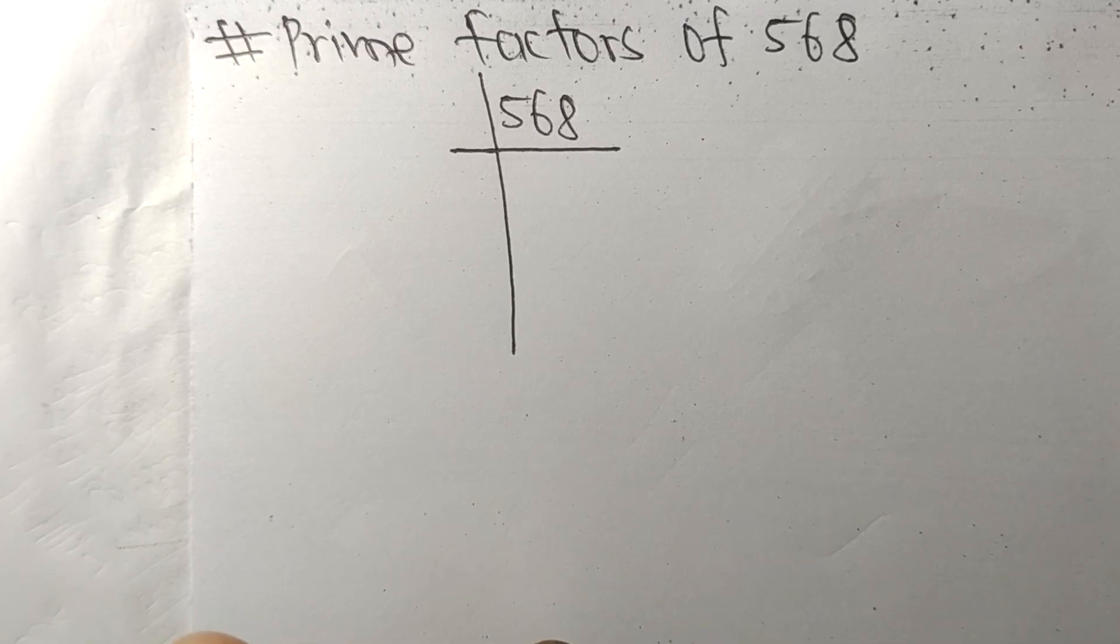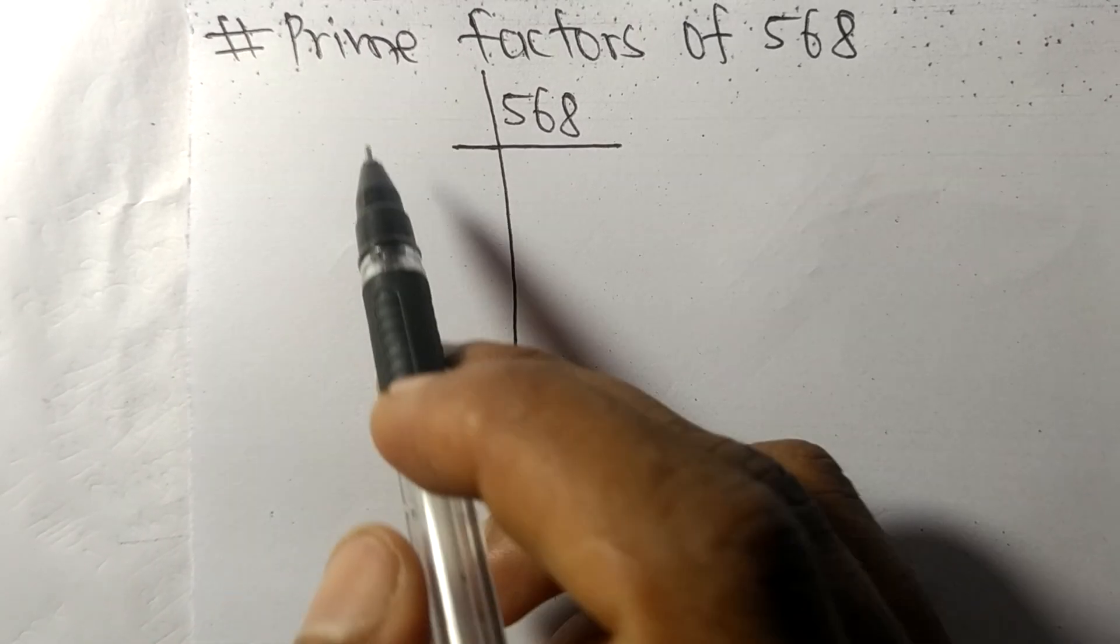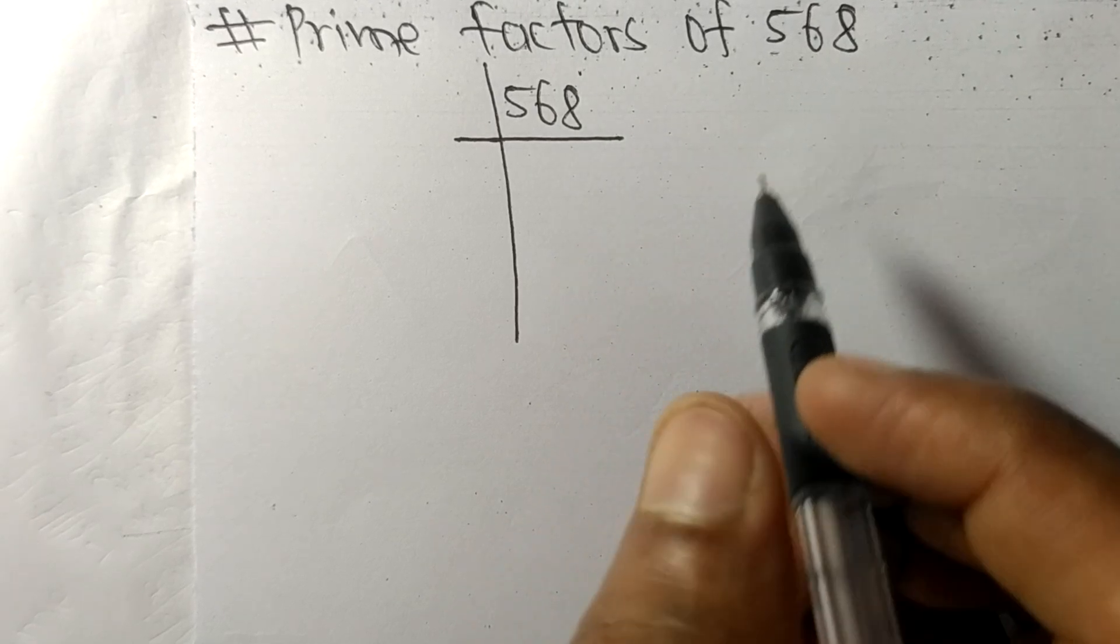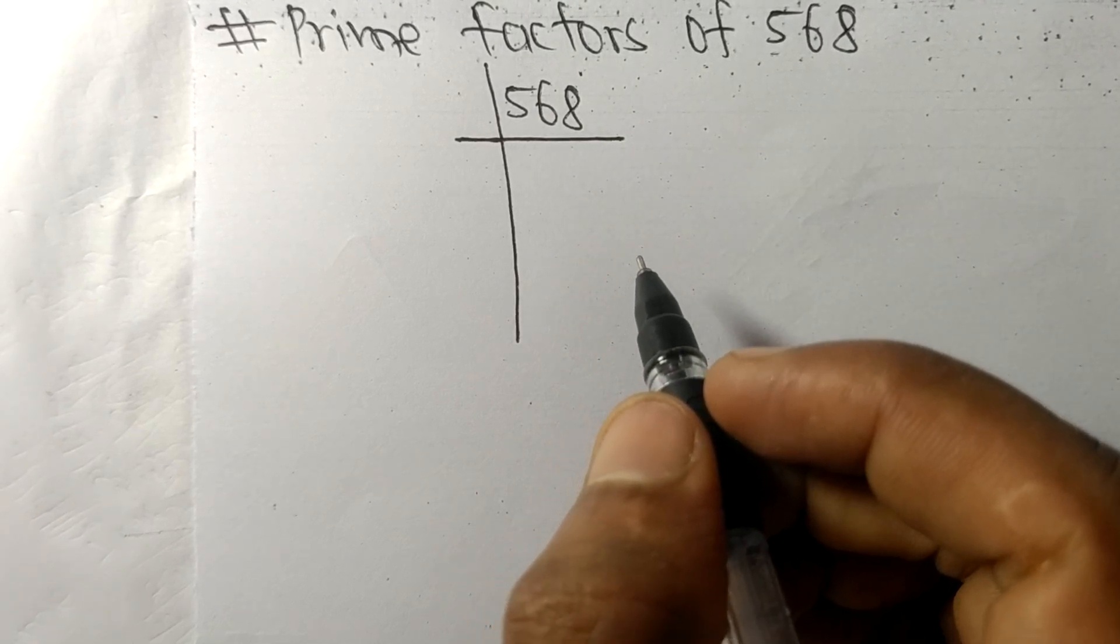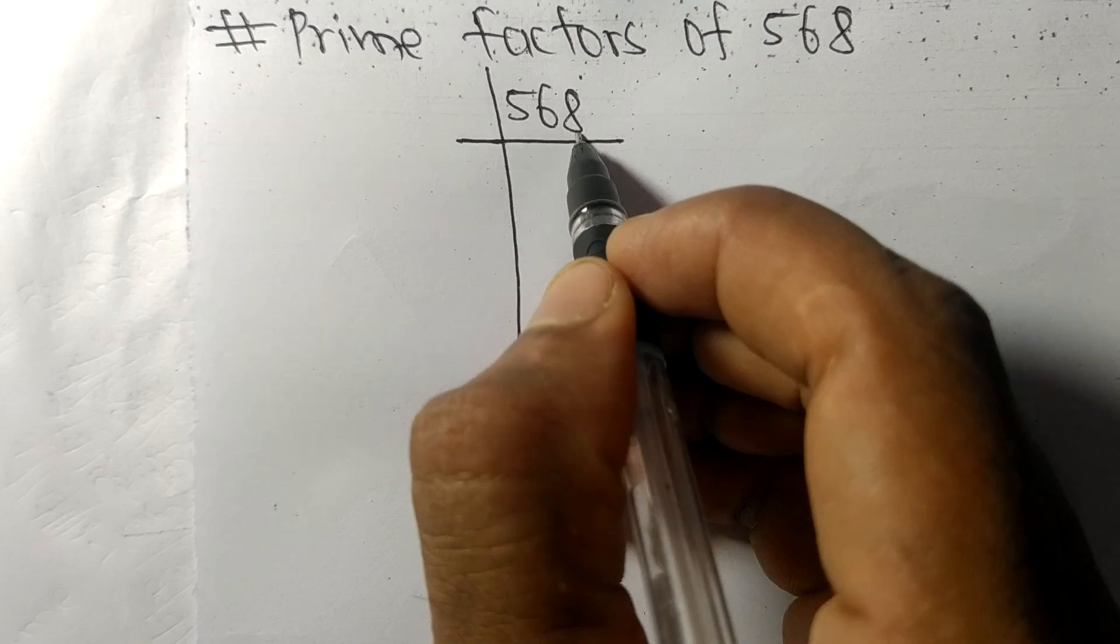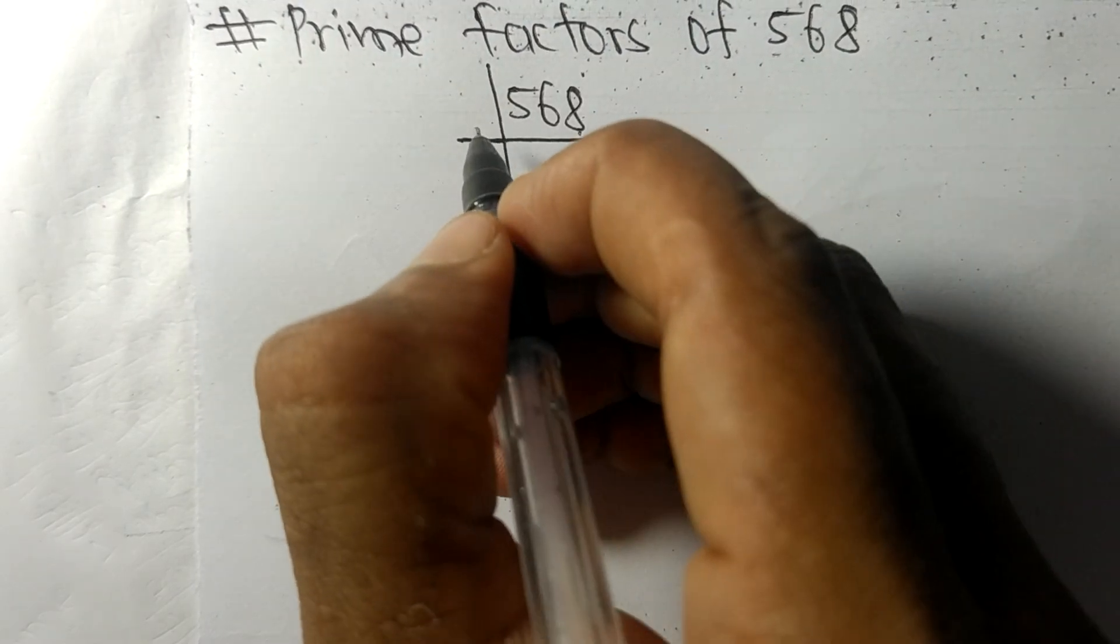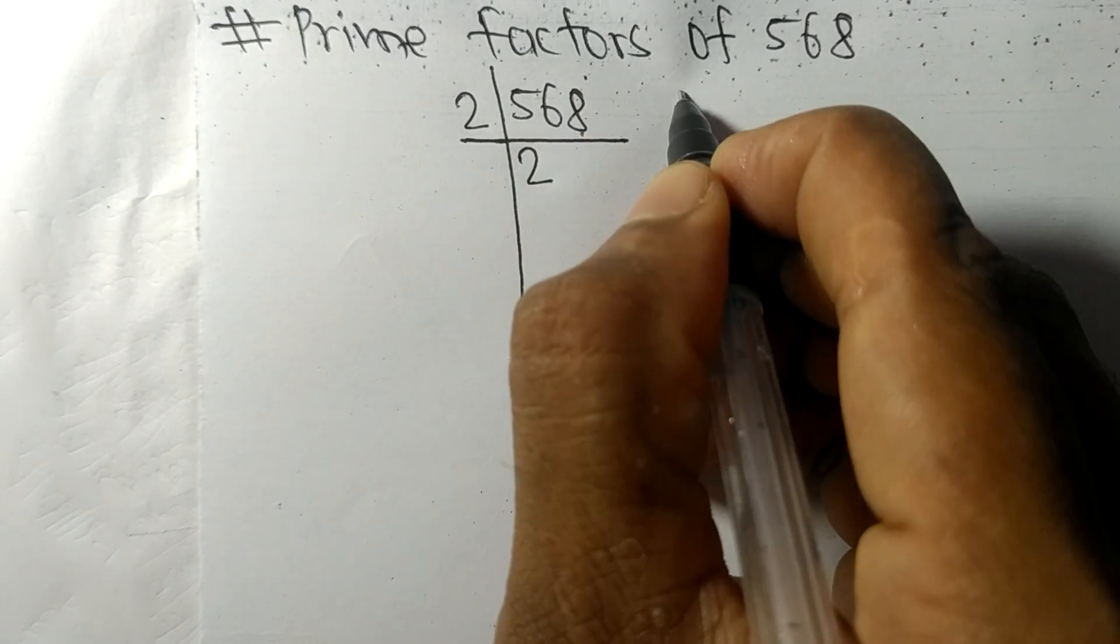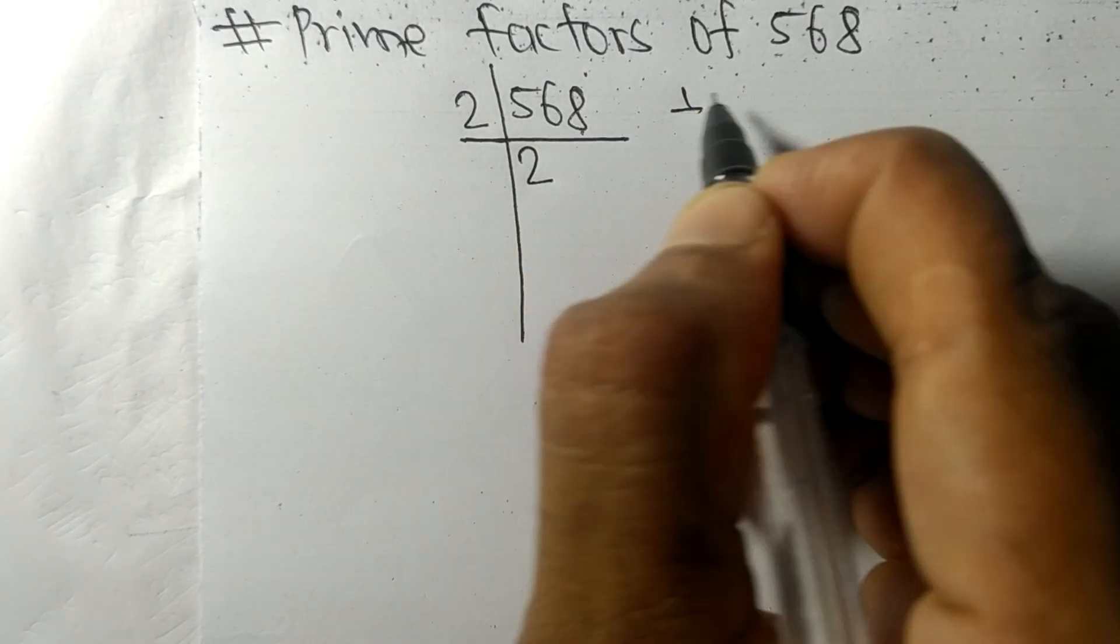Today in this video we shall learn to find the prime factors of 568. It contains even number 8 at the last, so the whole number is divisible by 2. Dividing 568 by 2: 2 times 2 equals 4, remainder 1. Bring down 6 to make 16. 2 times 8 equals 16, and 2 times 4 equals 8. We get 284.